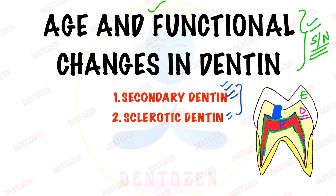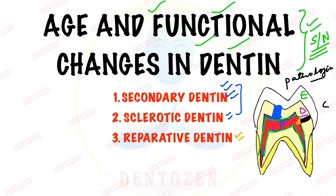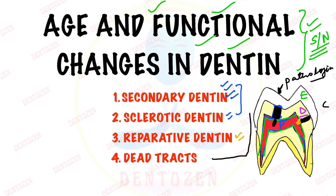Age and functional changes of dentine are considered together. For pathological changes, if there is a stimulus like a carious lesion in the dentine, it is repaired by formation of reparative dentine. The odontoblast cells lie in the pulp but their processes extend within the dentinal tubules. Pathological stimuli from outside can damage these odontoblastic processes, and the empty dentinal tubules get filled with air, appearing as dark areas in the ground section under the microscope — these areas are called dead tracts.